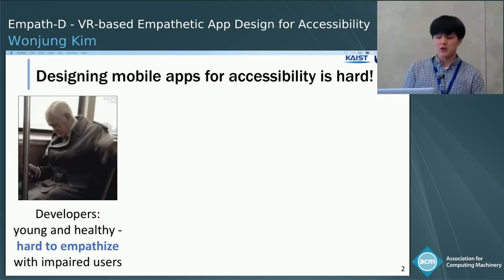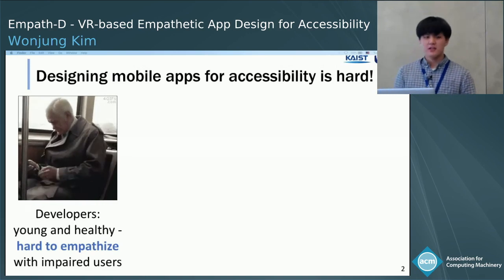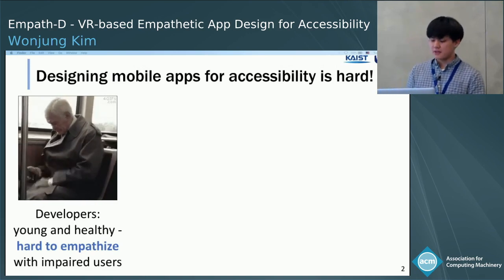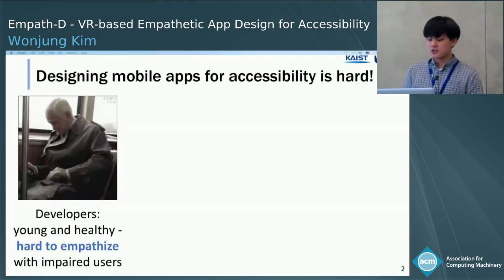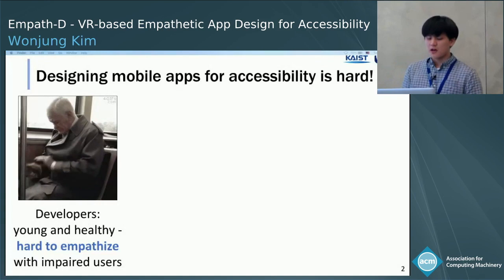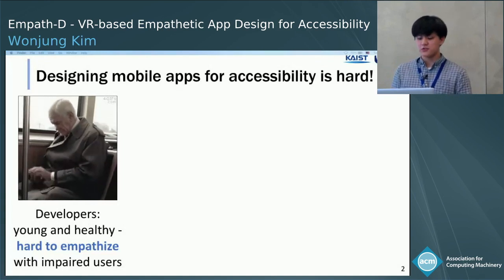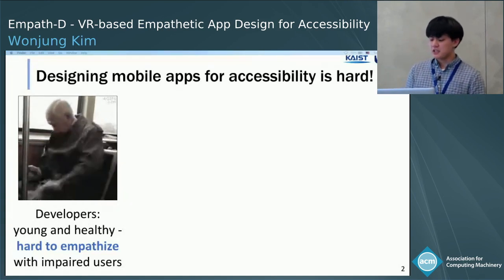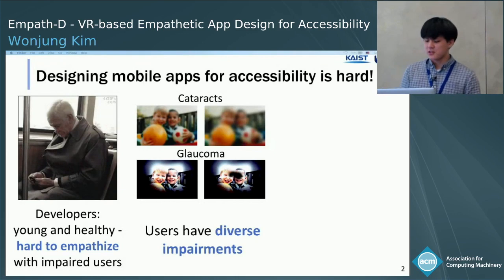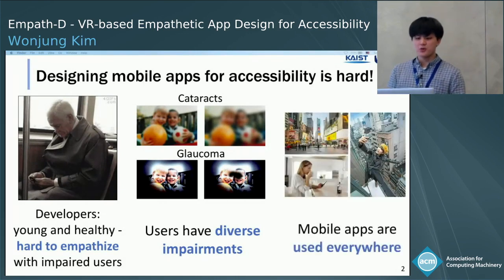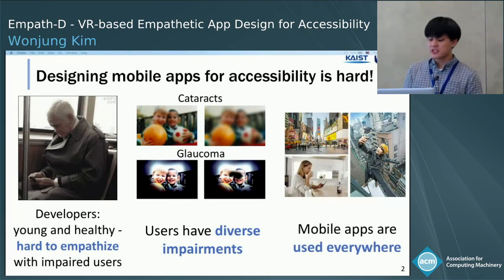Suppose you are a mobile app developer. You are probably young and healthy, so it would be difficult for you to understand the usability problems that impaired users would face when using your apps. A possible way to overcome this is to evaluate your application with impaired users. However, users have diverse impairments, and it is impossible to find all target impaired users and gain repeatable access to them. Furthermore, for mobile and wearable applications, usage environment needs to be considered in design as well.